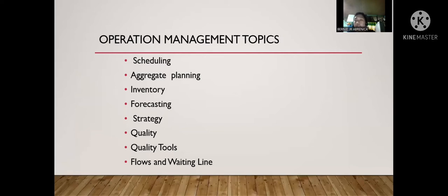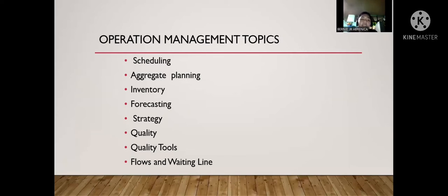Quality tools include the checklist, the fishbone diagram, the histogram, the Pareto chart, the control chart, a scatter diagram, and stratification. Lastly, we have flows and waiting lines, which refers to queuing.